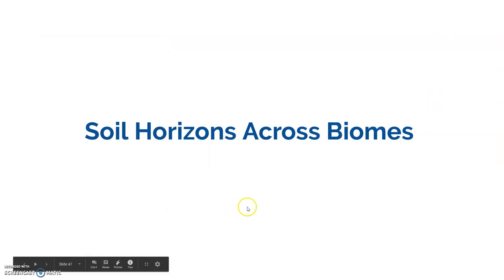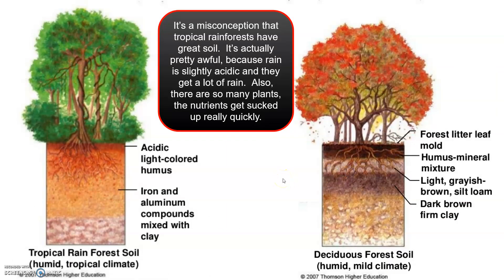Now let's briefly talk about soil horizons across biomes. Tropical rainforest soil is very humid and gets a lot of rain. Many students think rainforests should have great soil because of all the plants, but that's not true. Rain is slightly acidic, and with so much of it the soil becomes very acidic. There are also few nutrients in the soil because they're constantly taken up by growing plants as soon as they're available. Deciduous forest soil is humid and more mild, with nice distinct layers — leaf litter, humus — and a good color.